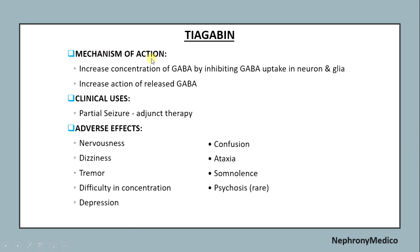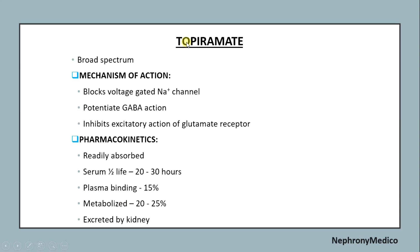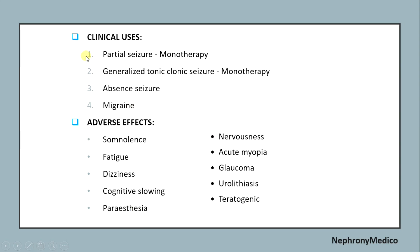Tiagabine: mechanism of action is increasing the concentration of GABA by inhibiting GABA uptake in neurons and glia, increasing action of released GABA. Clinical uses include partial seizure as add-on therapy. Adverse effects include nervousness, dizziness, tremor, psychosis, and depression. Topiramate has a broad spectrum. Mechanism of action includes blocking voltage-gated sodium channels, potentiating GABA action, and inhibiting glutamate receptor activation. Clinical uses include partial seizure, generalized tonic-clonic seizures, absence seizures, and migraine. Adverse effects include somnolence, fatigue, dizziness, cognitive slowing, and paresthesia.